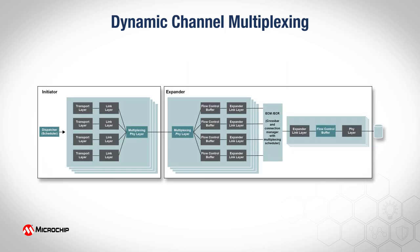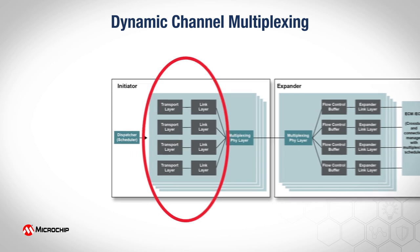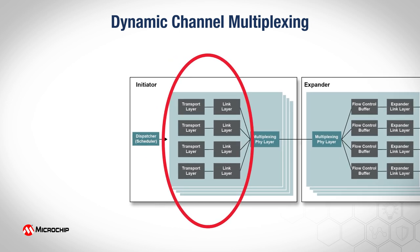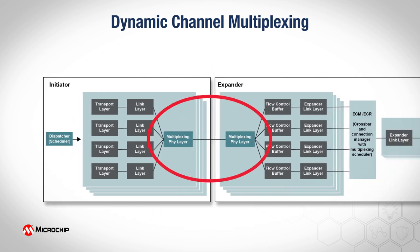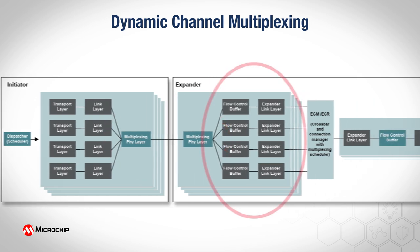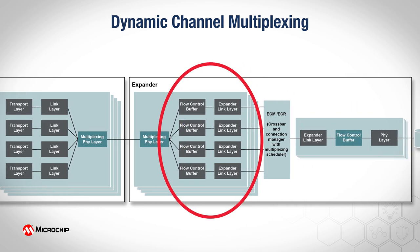DCM is a time division multiplexing technique which overcomes these limitations. Four independent transport and link layers are implemented in the initiator for every physical PHY. A multiplexing PHY layer is implemented in the initiator and in each expander PHY. Each multiplexed physical PHY then fans out to four logical link layers in the expander.